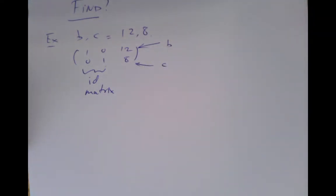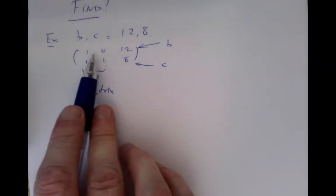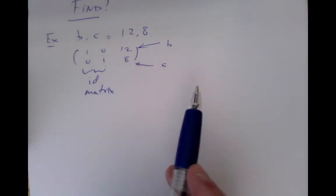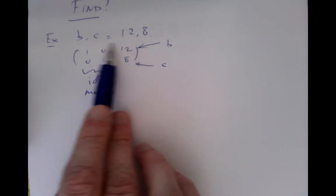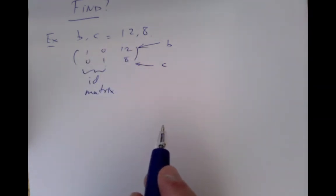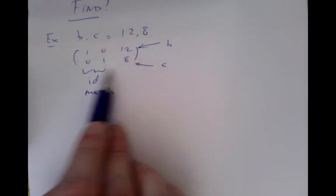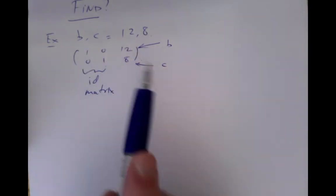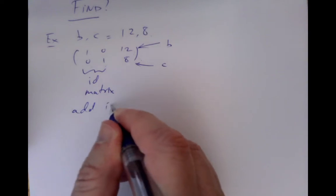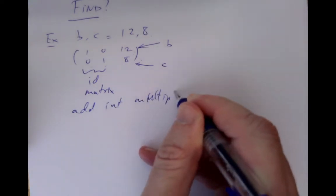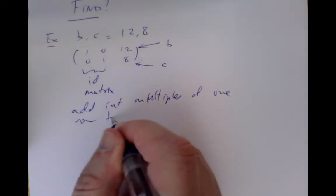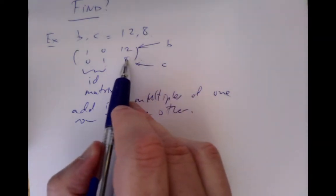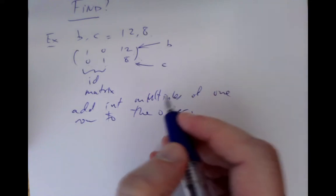Remember how row operations worked when we learned Gaussian elimination in linear algebra: you could add any multiple of a row to another row. In our situation, we're only going to allow integers, so we're going to allow adding an integer multiple of one row to another row. We won't need any other row operations. We could swap rows, but it won't help us at all. So we're going to add integer multiples of one row to the other. What we're trying to do is get the smaller one — in this case the 8 — to knock as much as possible out of the bigger one, the 12.